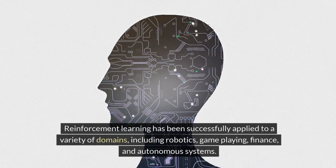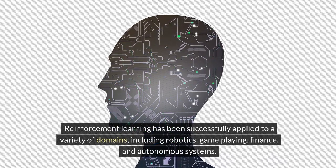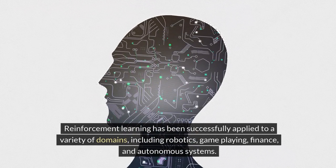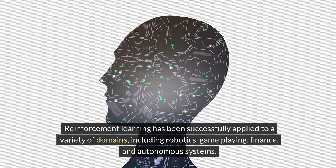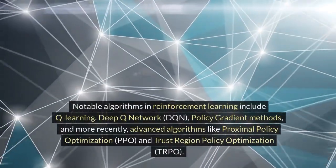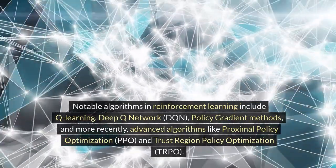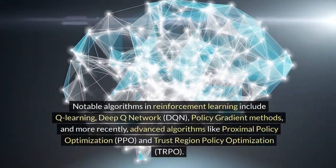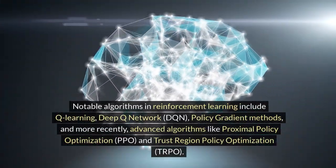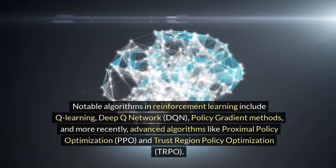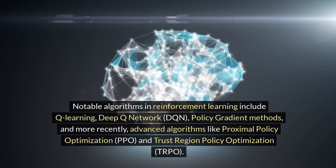Reinforcement learning has been successfully applied to a variety of domains, including robotics, game-playing, finance, and autonomous systems. Notable algorithms in reinforcement learning include Q-learning, deep Q-network (DQN), policy gradient methods, and more recently advanced algorithms like proximal policy optimization (PPO) and trust region policy optimization (TRPO).